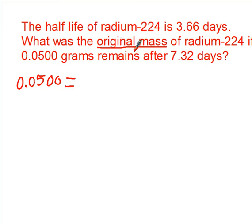So we set this up as 0.0500 equals our original amount. We'll call this our x times, I'm just following that equation now, one-half to the n. I want to make n a different color.